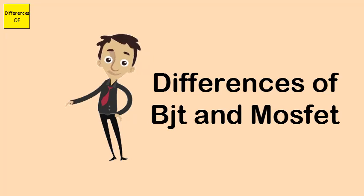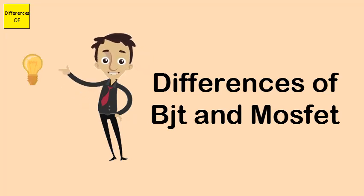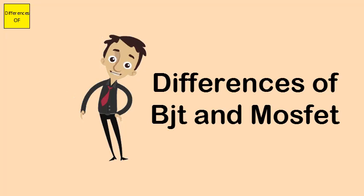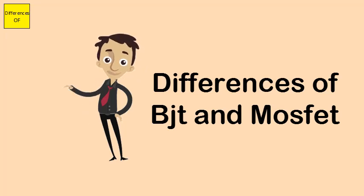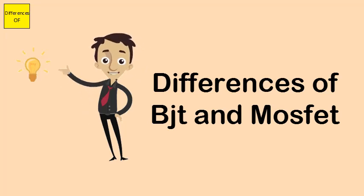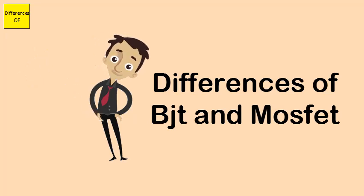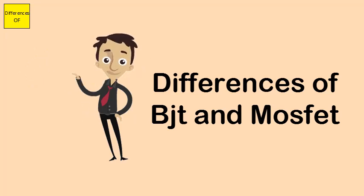BJT is cheaper, while MOSFET is costlier. In BJT, the current conduction is due to both majority and minority charge carriers. In MOSFET, the current conduction is due to majority charge carriers only.